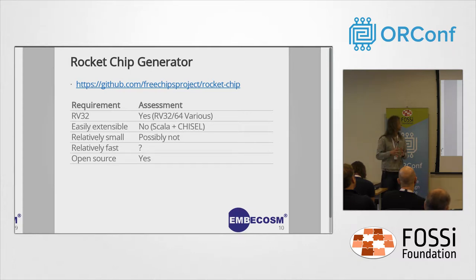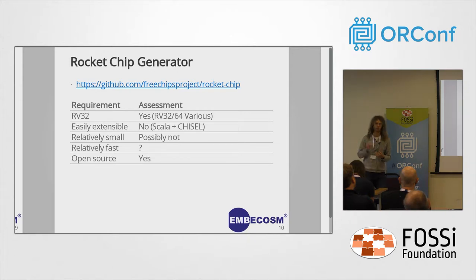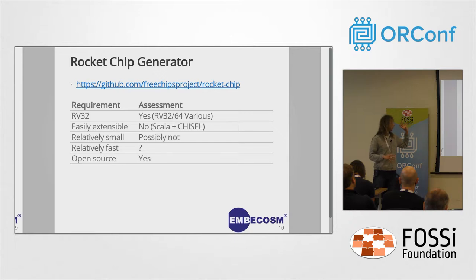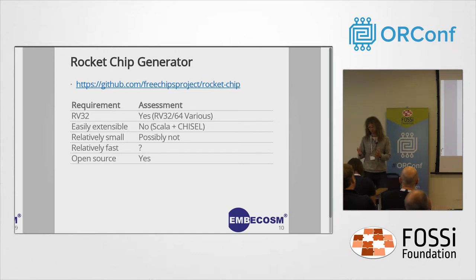As for whether the Rocket Chip Generator produces something relatively small — I'm not sure. I spent time trying to generate different cores from it and sometimes got confusing errors from the toolchain. We decided to go forward with the RISC-V core from PULP and PicoRV32, as the Rocket Chip Generator would probably be too difficult for this project.